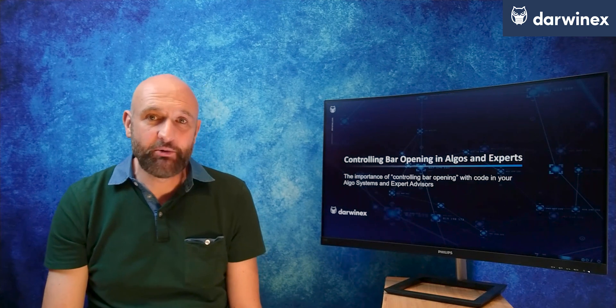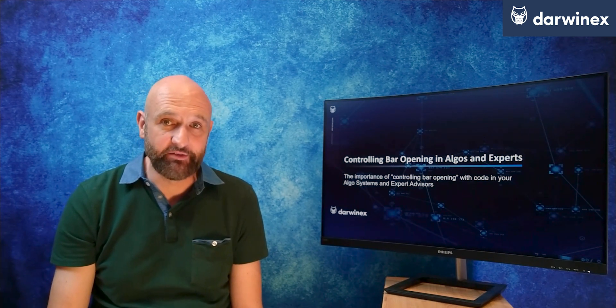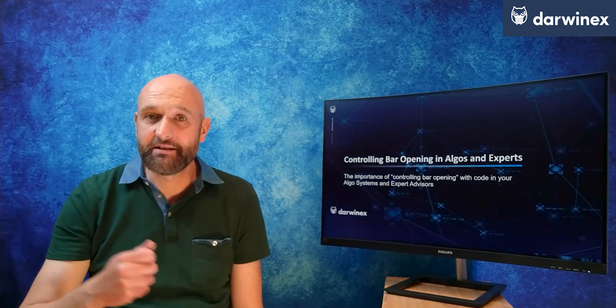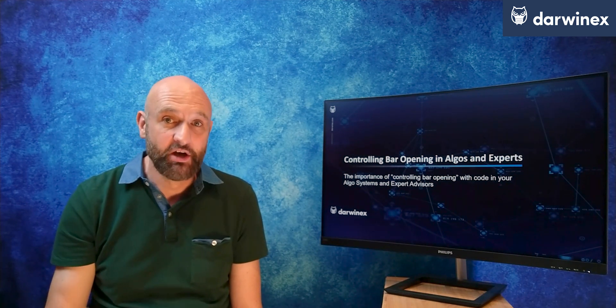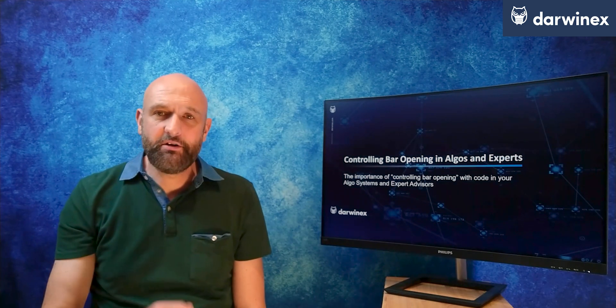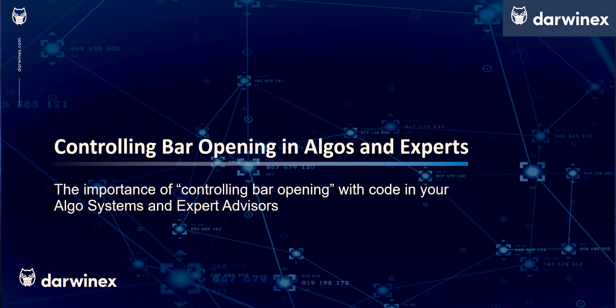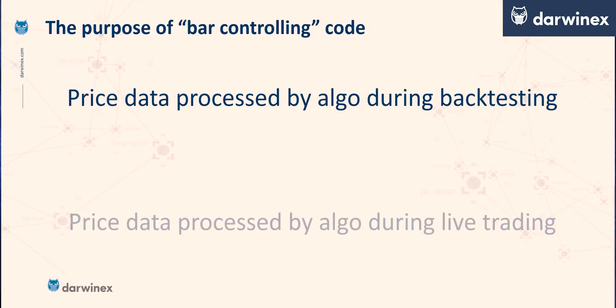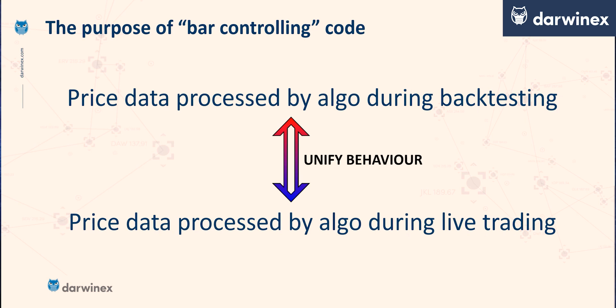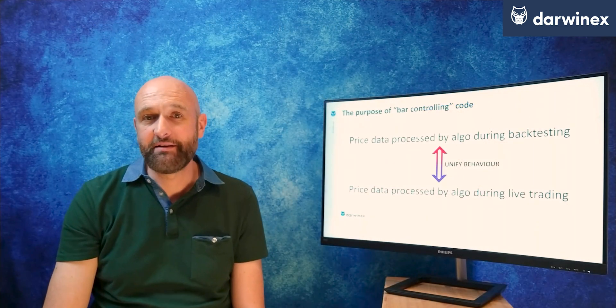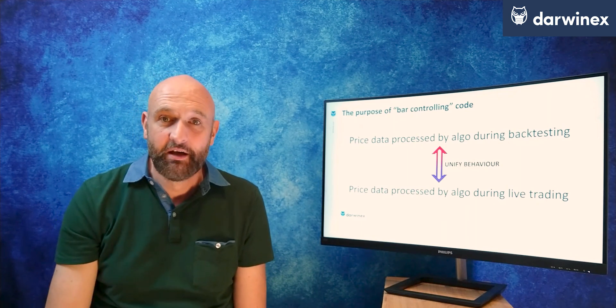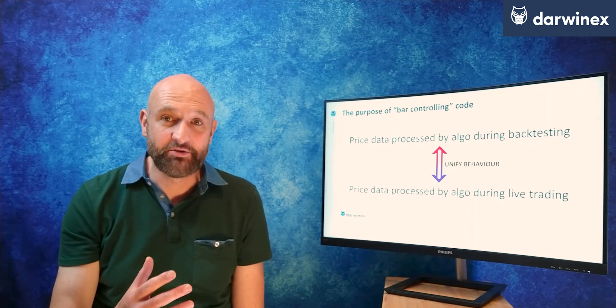What I'm going to cover in this episode is how you control bar opening in your code. I'll be using the MQL5 programming language for MetaTrader 5, but the concepts that I talk about will easily translate over to any other programming language and any other trading platform. So let's start to take a look at what this bar controlling code actually needs to achieve. In a nutshell, it needs to unify the behaviour between the price data processed by your algo during backtesting and the price data processed during live trading.